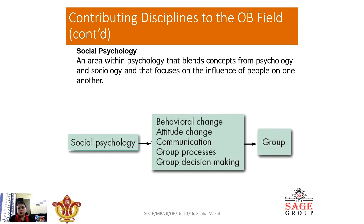The next is social psychology, which is a combination of sociology and psychology. It leads to behavioral change and attitudinal change — whether positive or negative. There should be proper interaction. You have to work in a group and take group decisions because it is related to the social aspect, and that is why it impacts the group level.